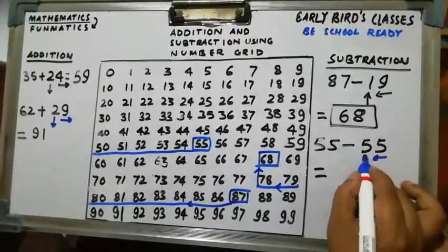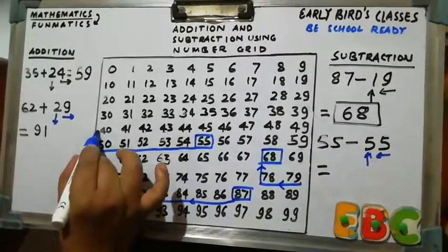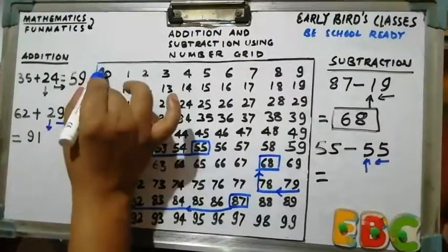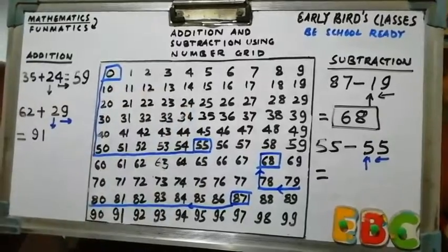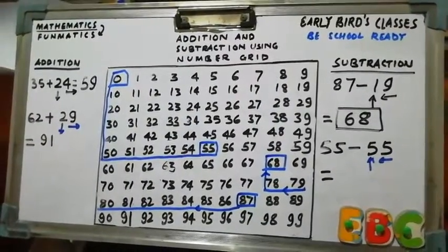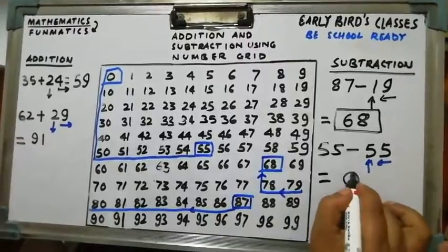Now 5 places up. So 1, 2, 3, 4, 5. Where is that? 0. Means 55 minus 55 is 0.